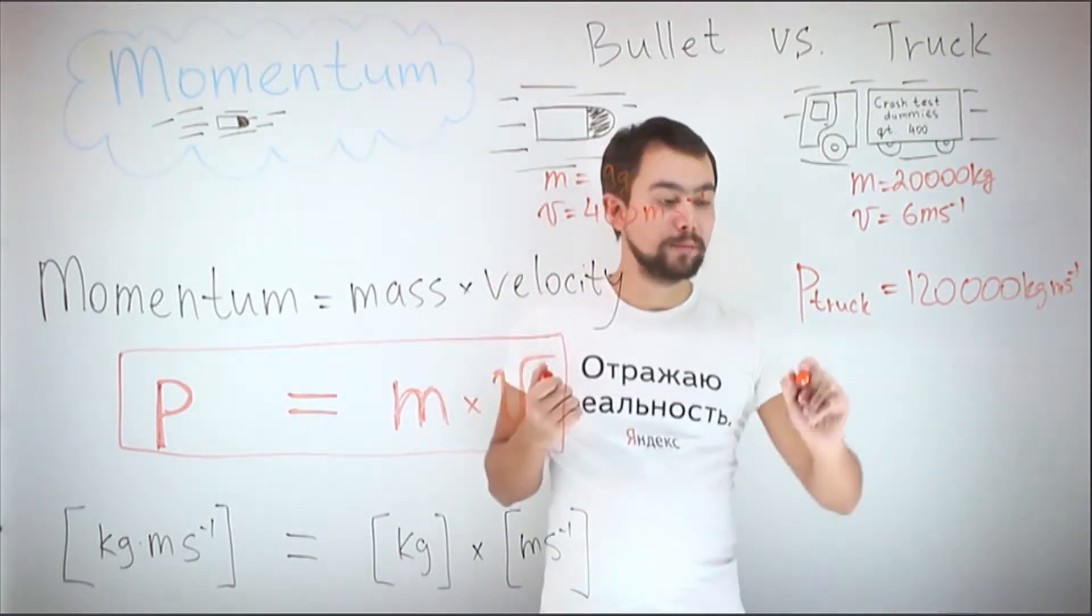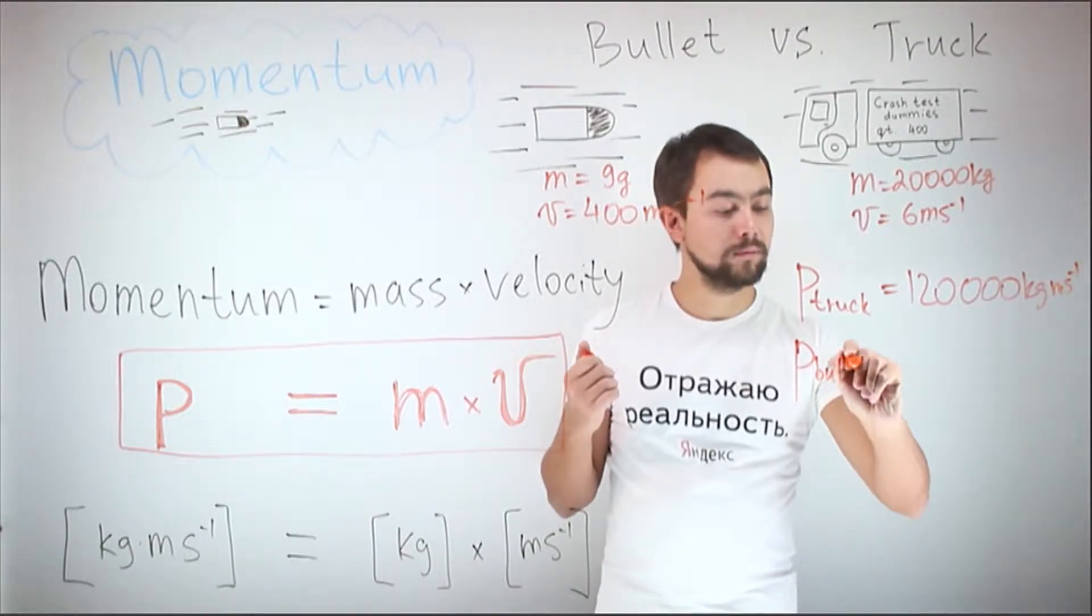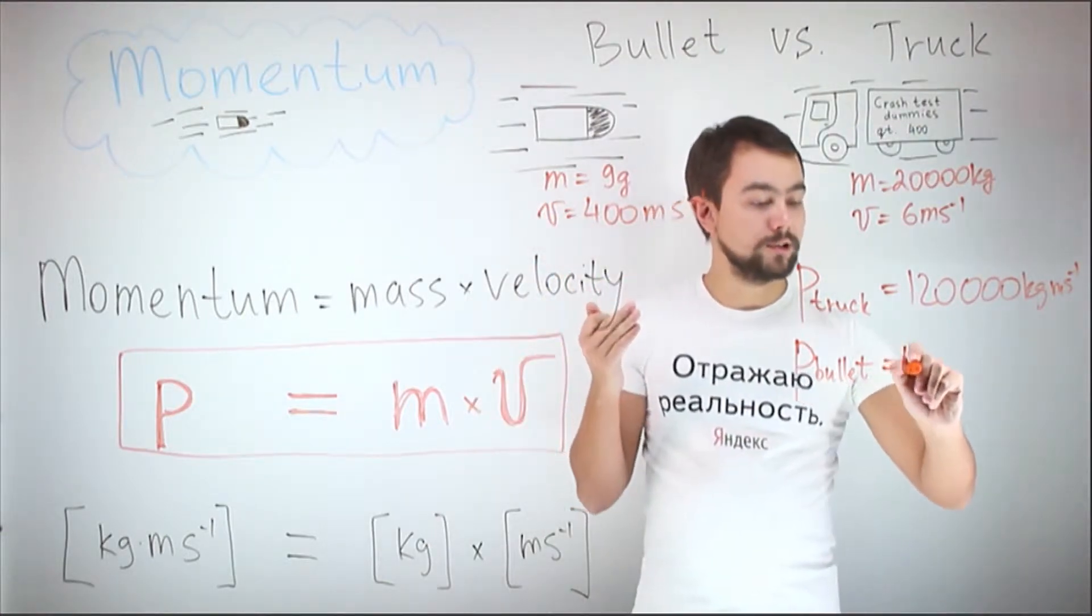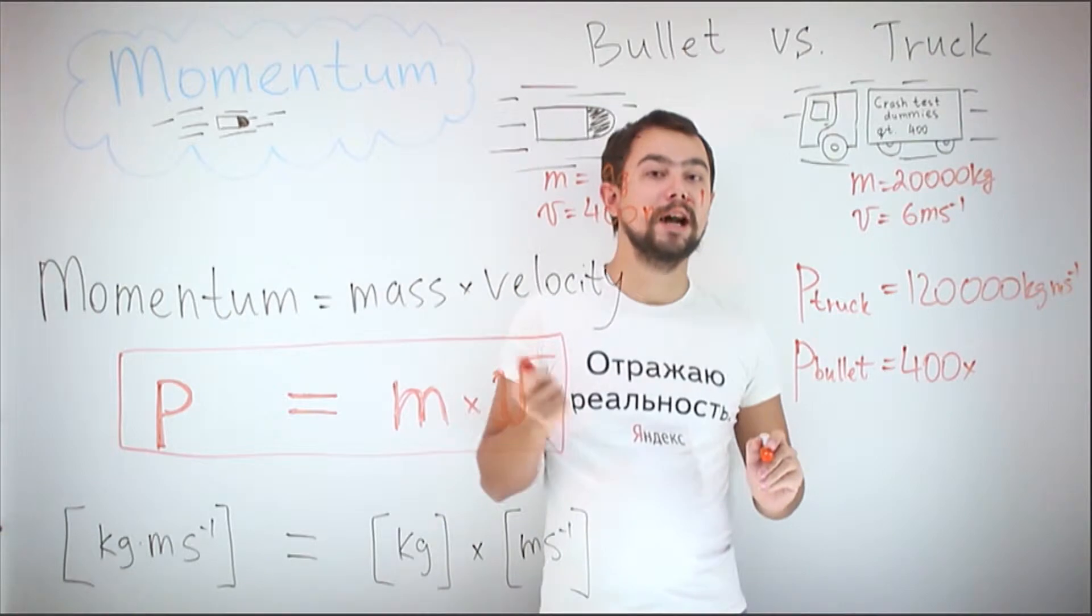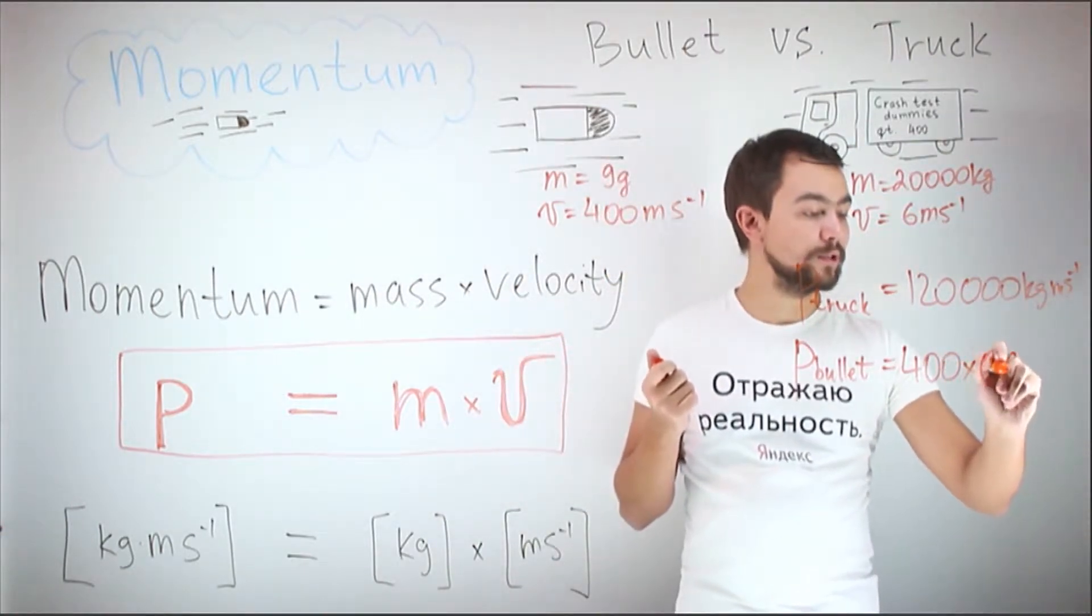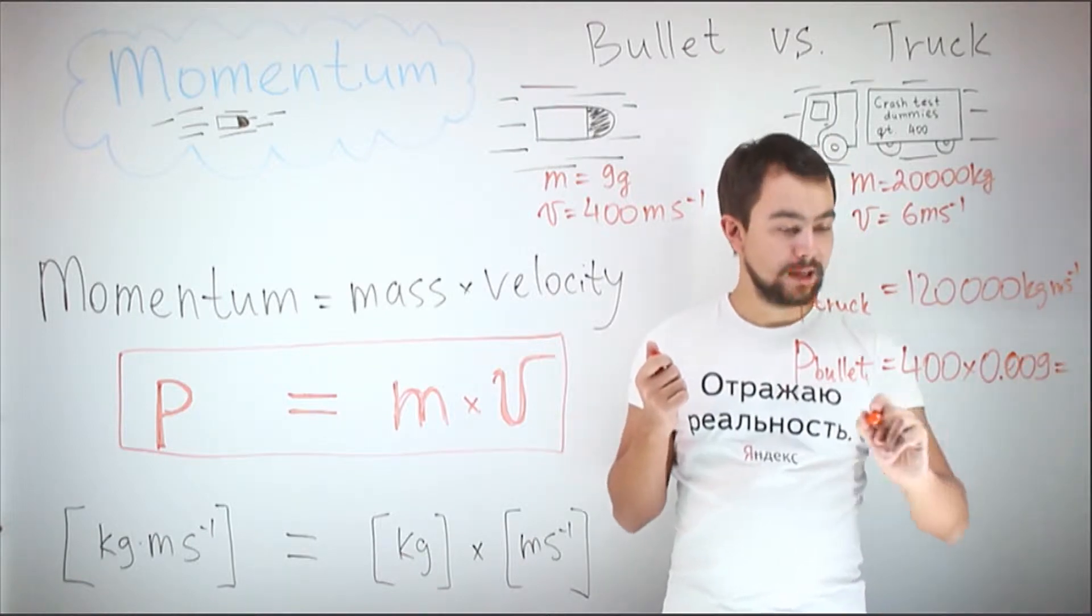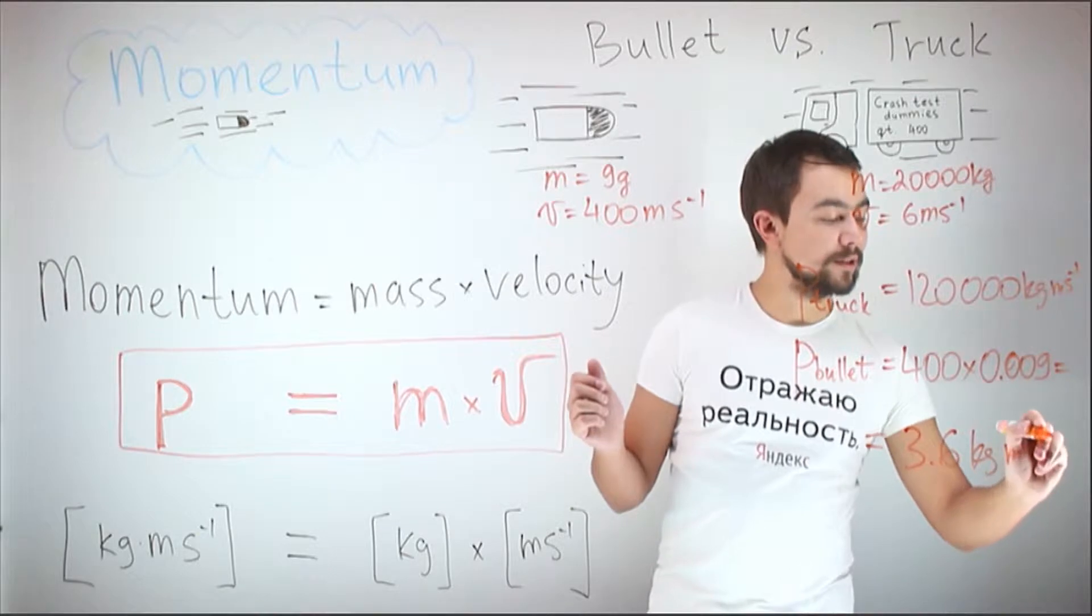Now the momentum of the bullet. Velocity 400 times mass is 9 grams, so it's 0.009 kilograms. 3.6 kilogram meters per second.